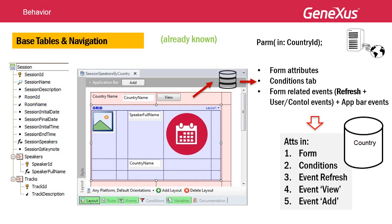Again, contrary to the case of web panels, the refresh event here relates to the navigation of the form's base table — so it's like the load event, but for navigating a different table. Obviously, the grid's information may not be accessed inside the refresh event. As in all cases of implicit tables, when the events include a for each, the base table will be considered a for each nested in the implied table.